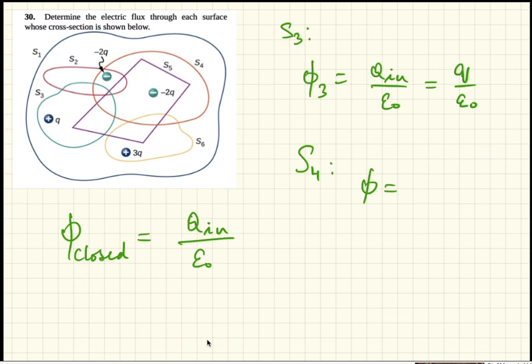So Q inside divided by epsilon naught equals minus 4Q divided by epsilon naught.